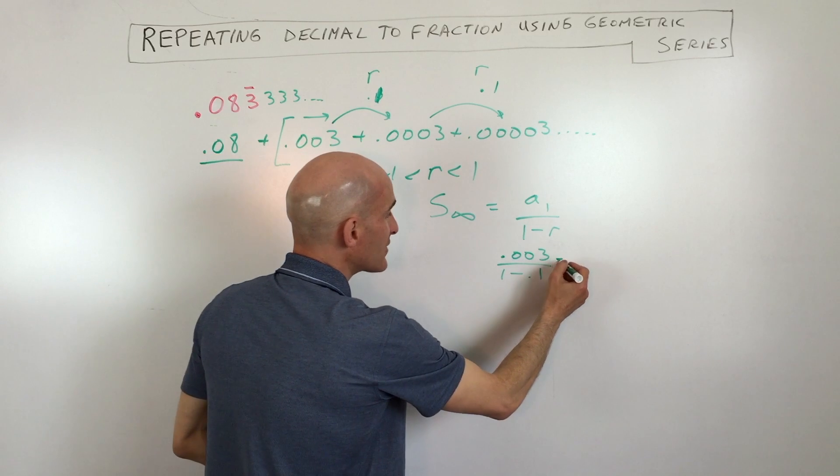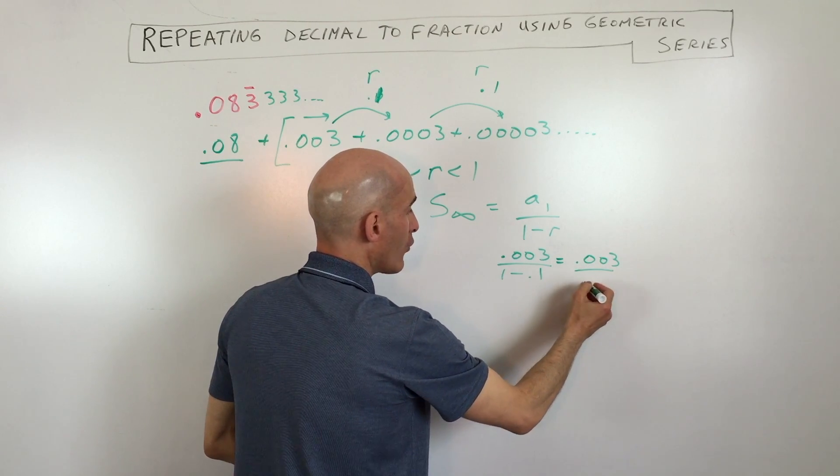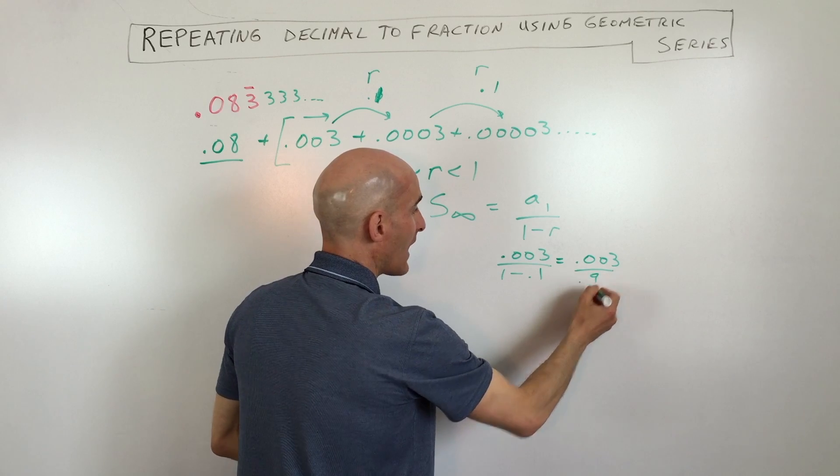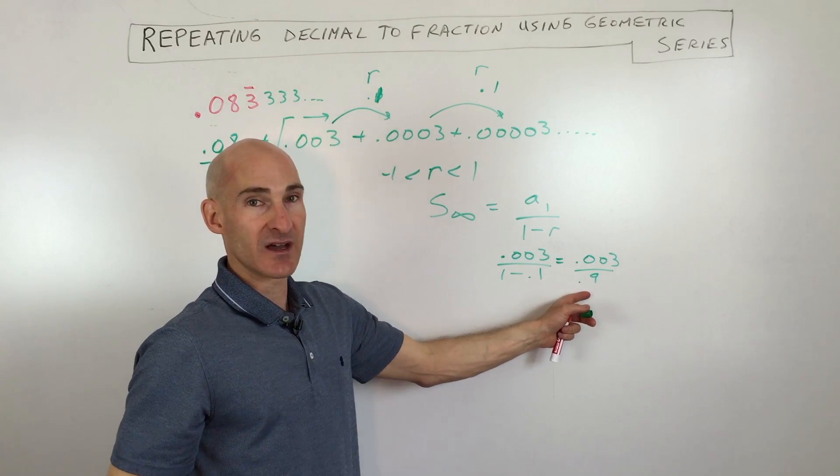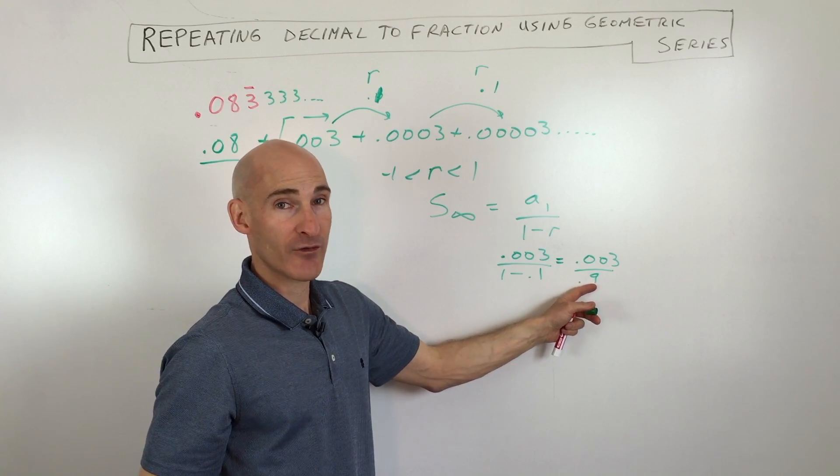So if we simplify this, we get 0.003 over 0.9. Now you can see this is still decimals here. We want to convert this into a fraction.